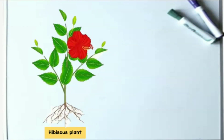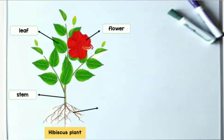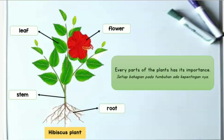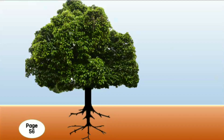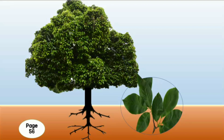Let's recall the previous lesson — parts of plants. This is the hibiscus plant. This is the leaf, daun. This is the flower, bunga. This is the stem, batang. And this is the root, akar. Every part of the plant has its importance. Setiap bahagian pada tumbuhan ada kepentingannya. These notes are from page 56 of the textbook.